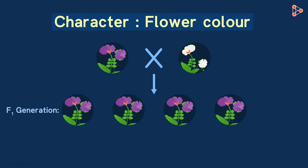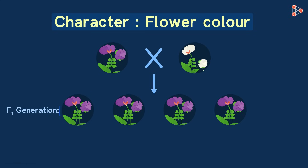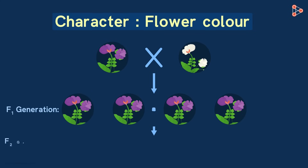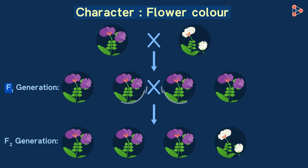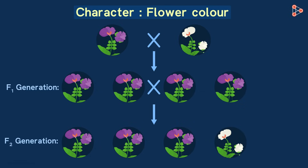Getting back to our example of flower colour, Mendel obtained all the plants with purple-coloured flowers in the F1 generation. But this wasn't the case in the next step. When the offsprings from this F1 generation were crossed, one plant out of the four had traits just like the original parent — one out of the four had white coloured flowers and three had purple coloured flowers. With this, he concluded that characters are passed from one generation to the other.